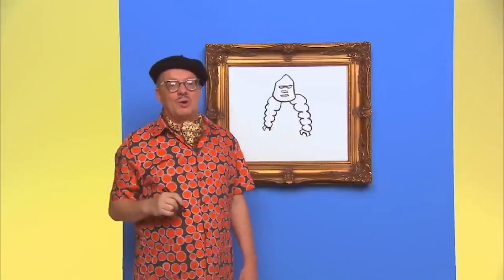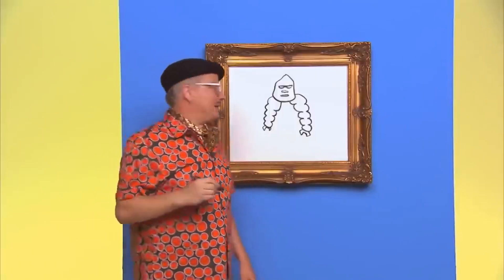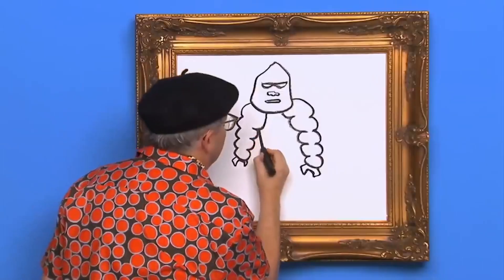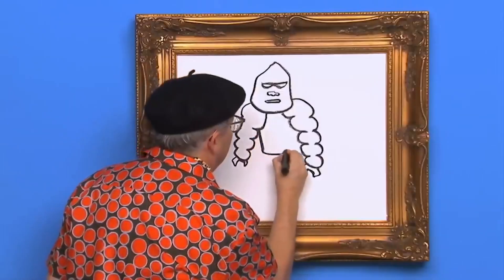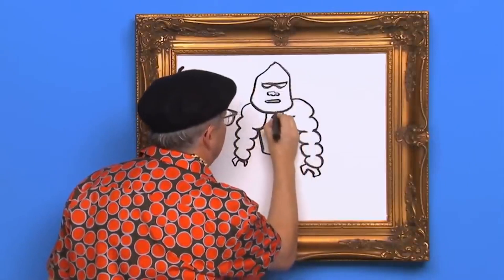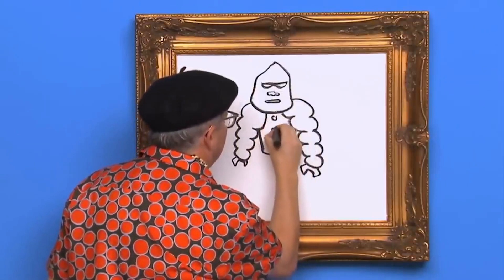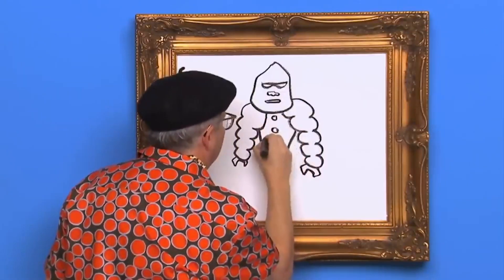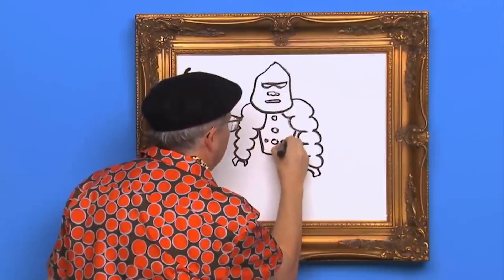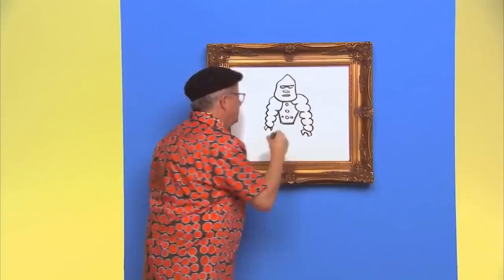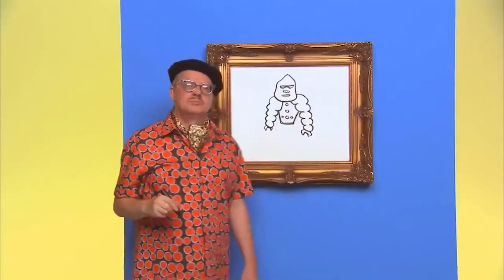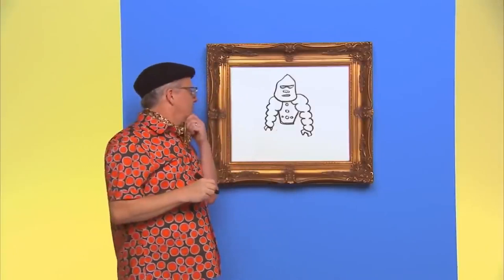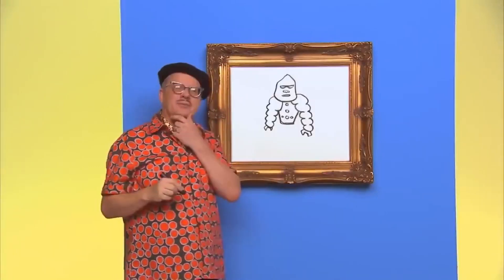Let's draw its strong robot gorilla body. Our robot gorilla looks good but it's missing something.